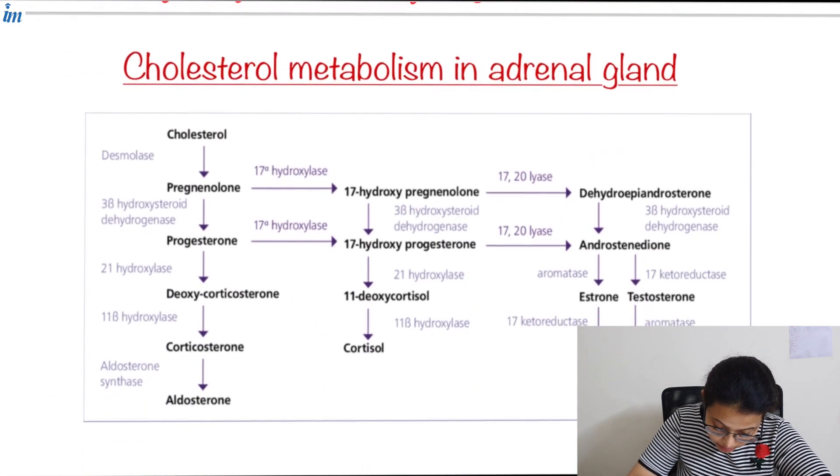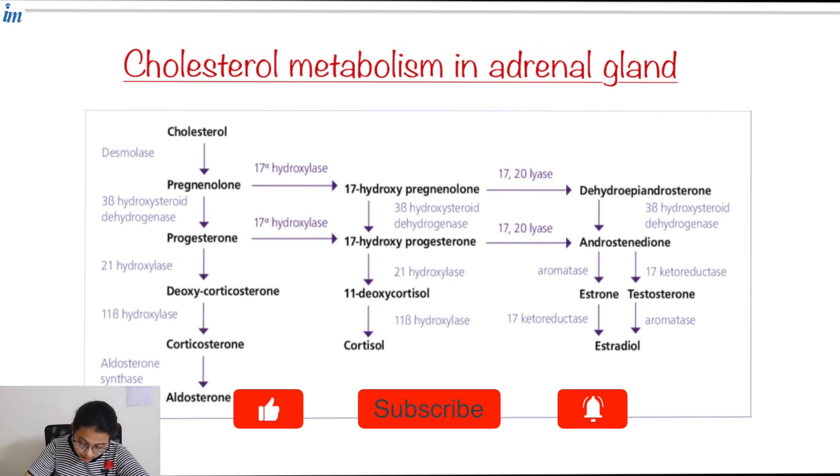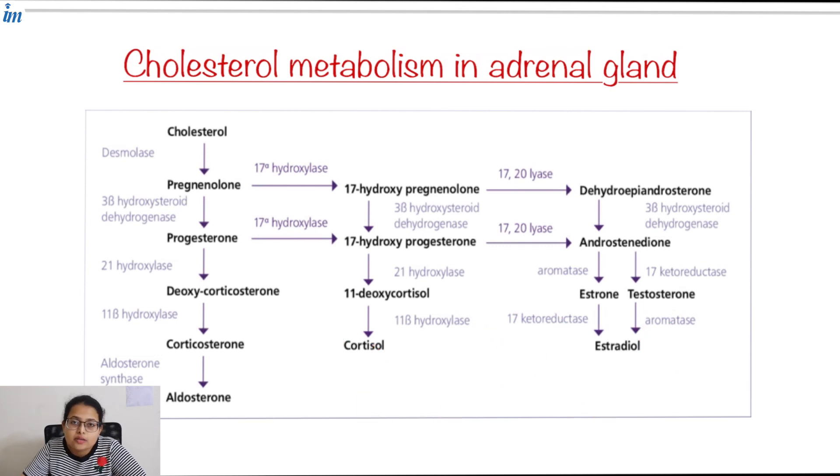Now, cholesterol metabolism in the adrenal gland. As you can see, there are many enzymes involved in this pathway. In CAH, the most common enzyme deficiency is 21-hydroxylase. If this enzyme is deficient, the final product aldosterone and cortisol are not produced. But in the third limb, 21-hydroxylase is not required for testosterone production, so testosterone is produced in sufficient quantity.